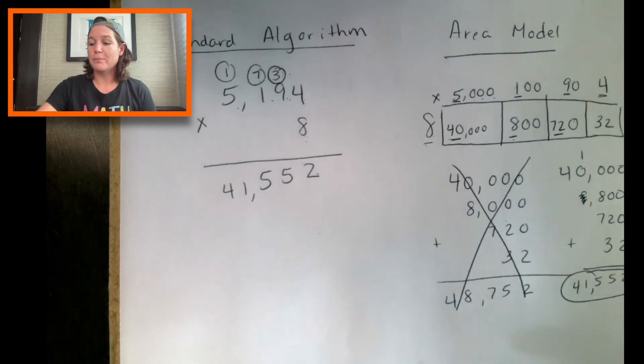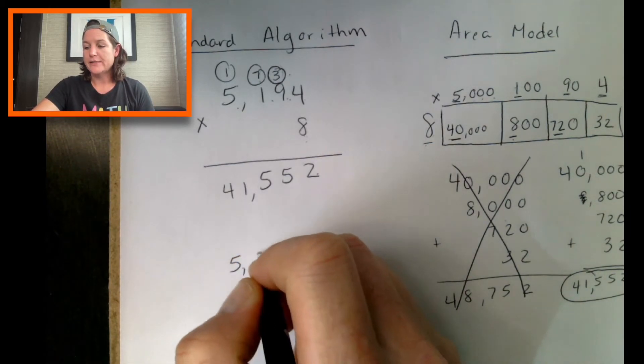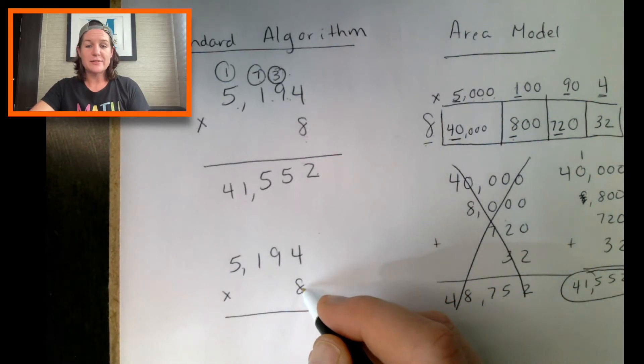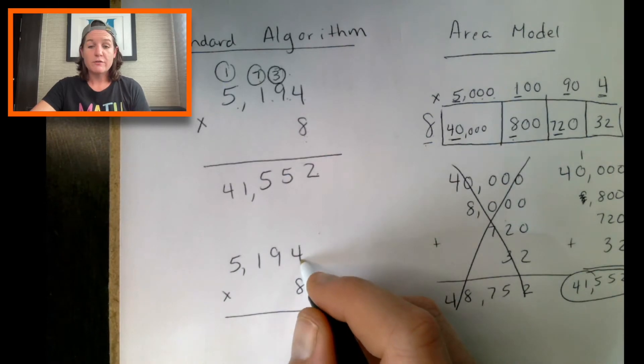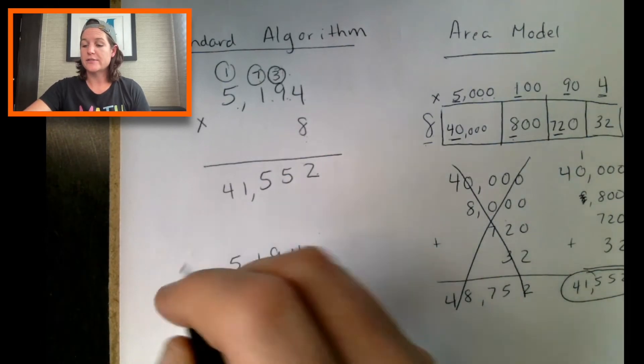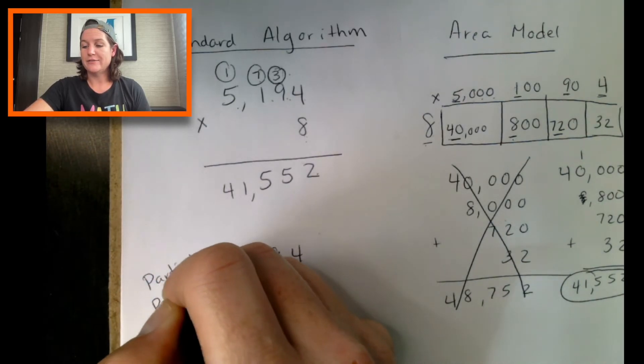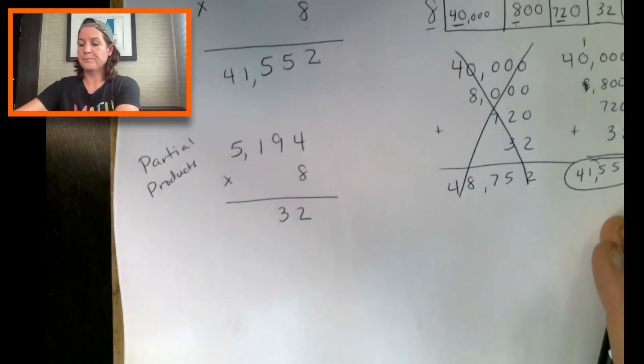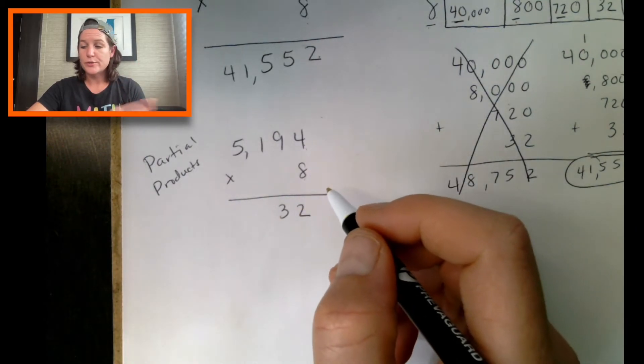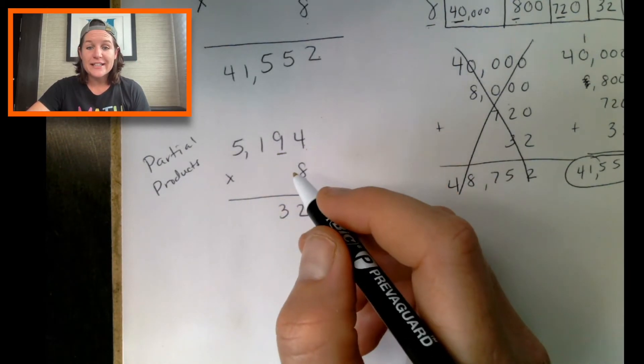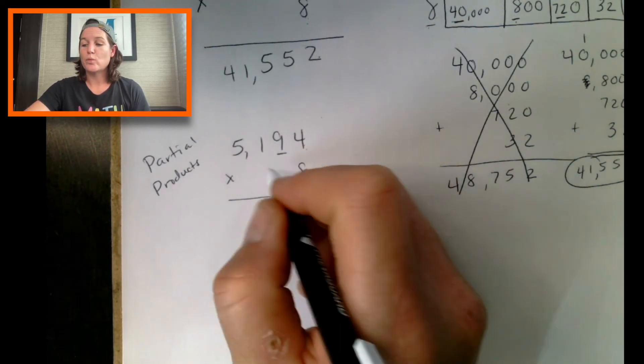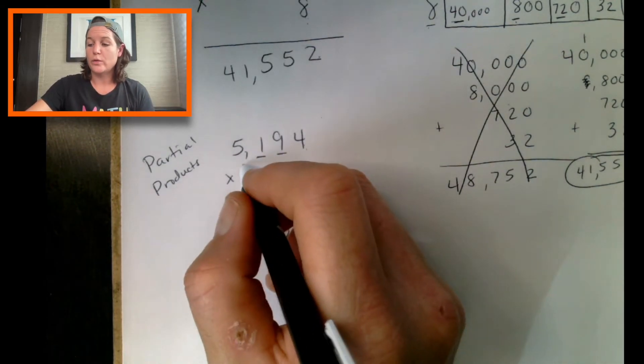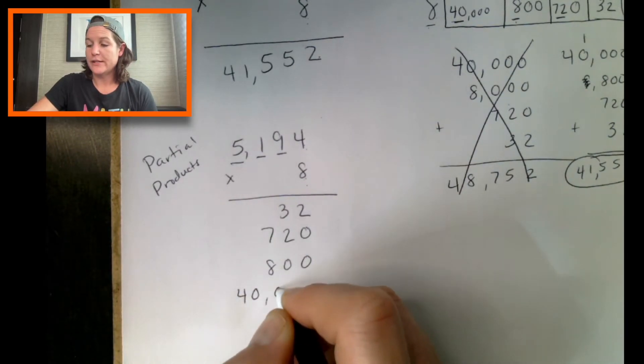Okay. The last one would be partial products, which is very, very similar. It kind of looks like you set it up as standard algorithm. And what you do is you multiply the 8 by the actual value. So 8 times 4 would be 32. Again, this is partial products. It's kind of like taking this one right here and we're going to flip it down there. I'm actually going to bump this up so you can see. All right. So 8 times 4, we know is 32. 8 times 90 would be 720. 8 times 100 would be 800. 8 times 5,000 would be 40,000. And you add them up that way.